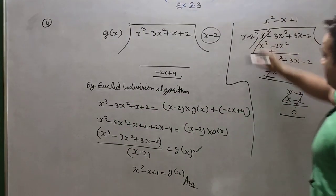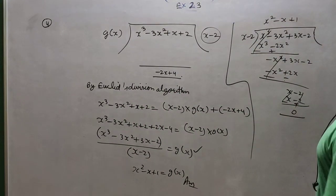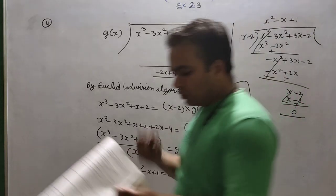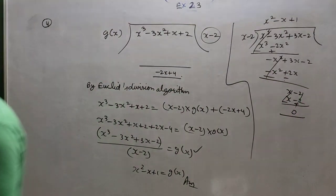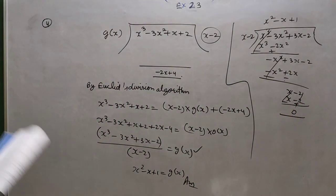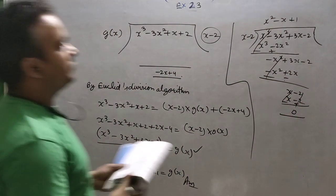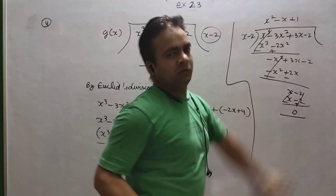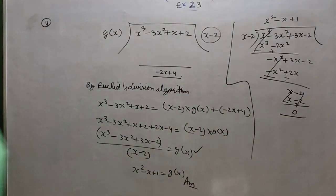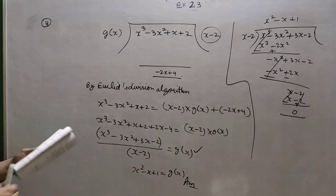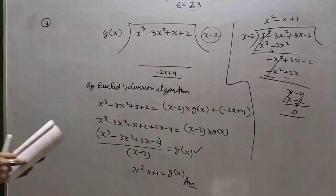Students, this division — if you do more and more practice of such types of divisions, it will take time but you have to build your speed in this particular process. Now I am coming to question number 5: give examples of polynomials p(x), g(x), q(x), and r(x) which satisfy the division algorithm.